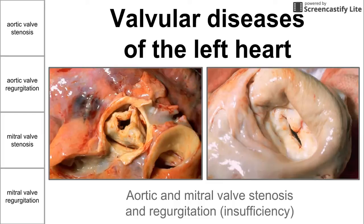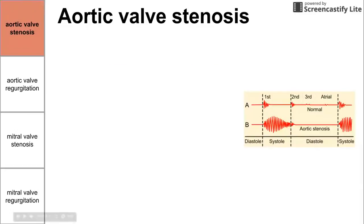Before we begin, we have two pathology pictures here. The left one is an aortic valve stenosis, and the right one is a mitral valve stenosis. Now let's jump right into them, starting with aortic valve stenosis.